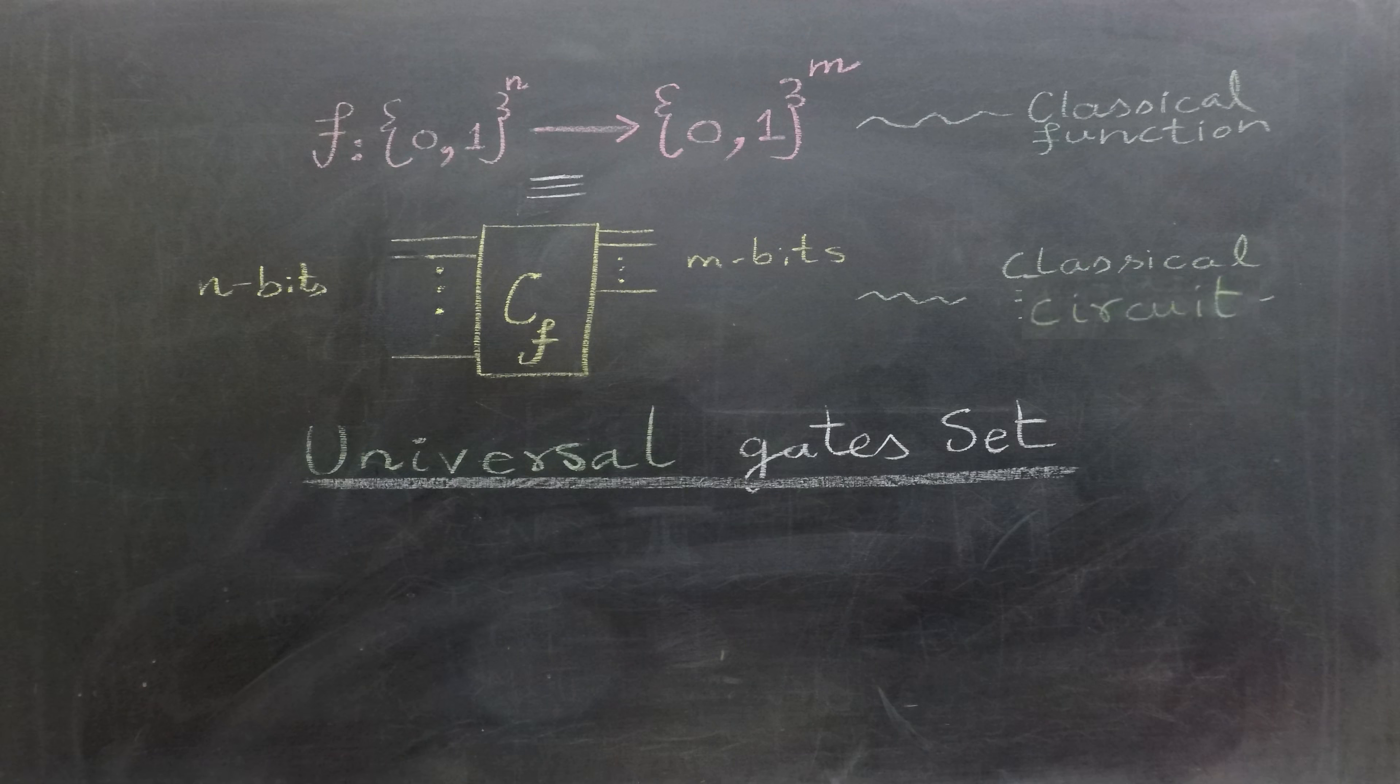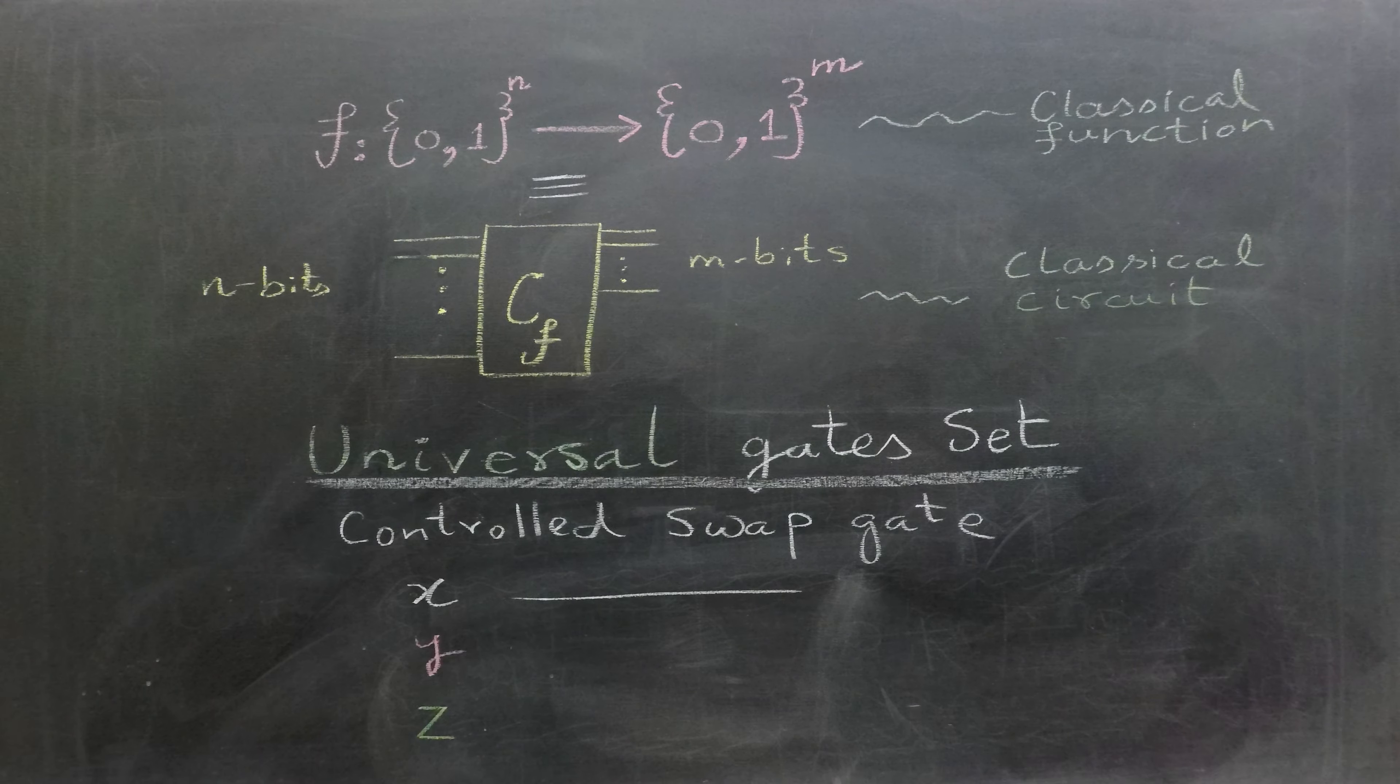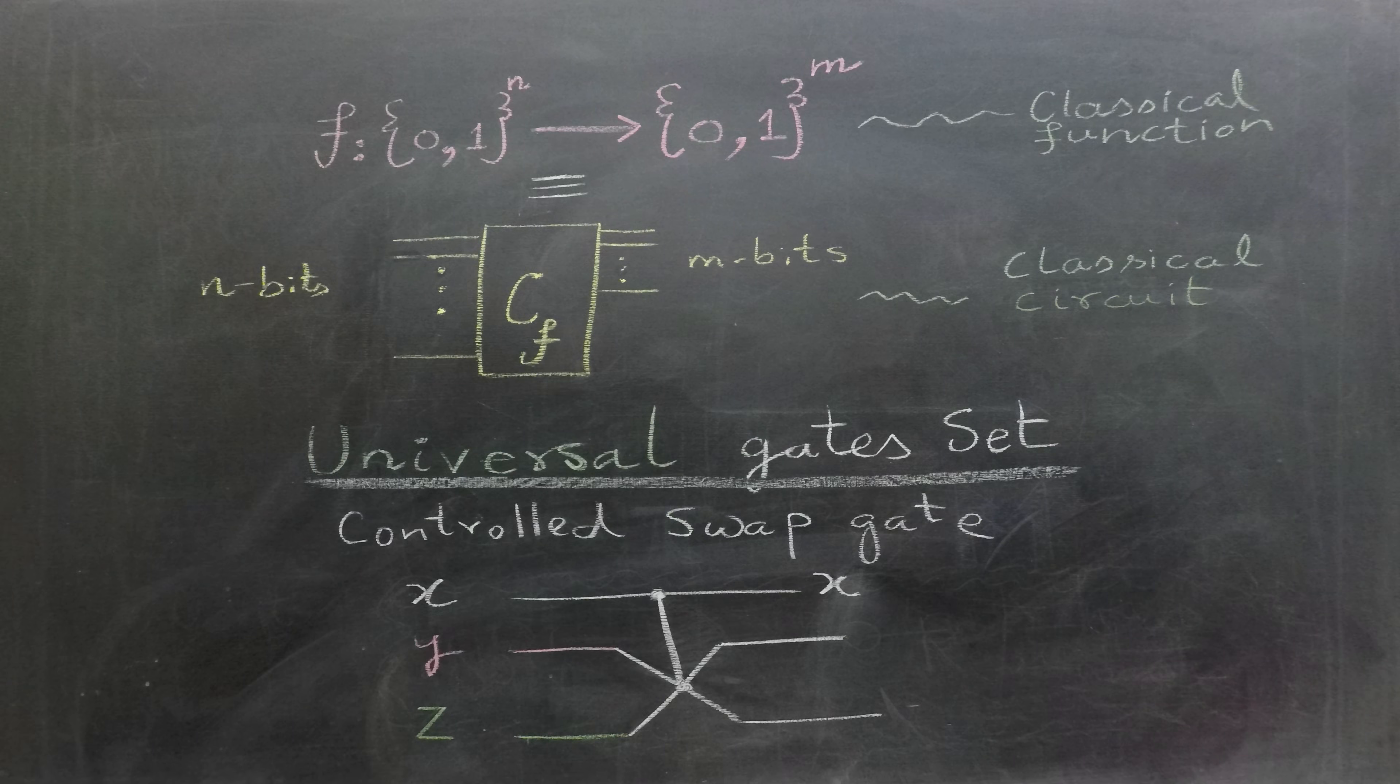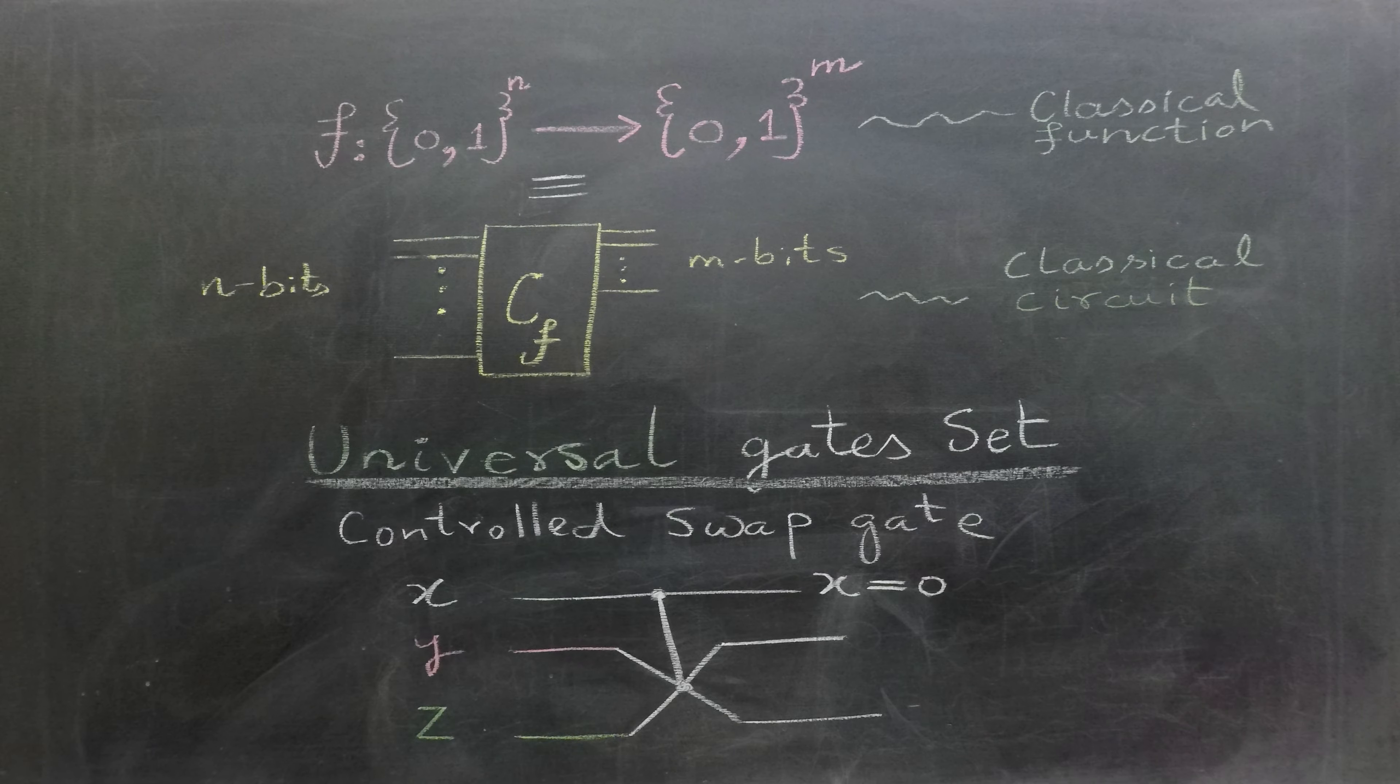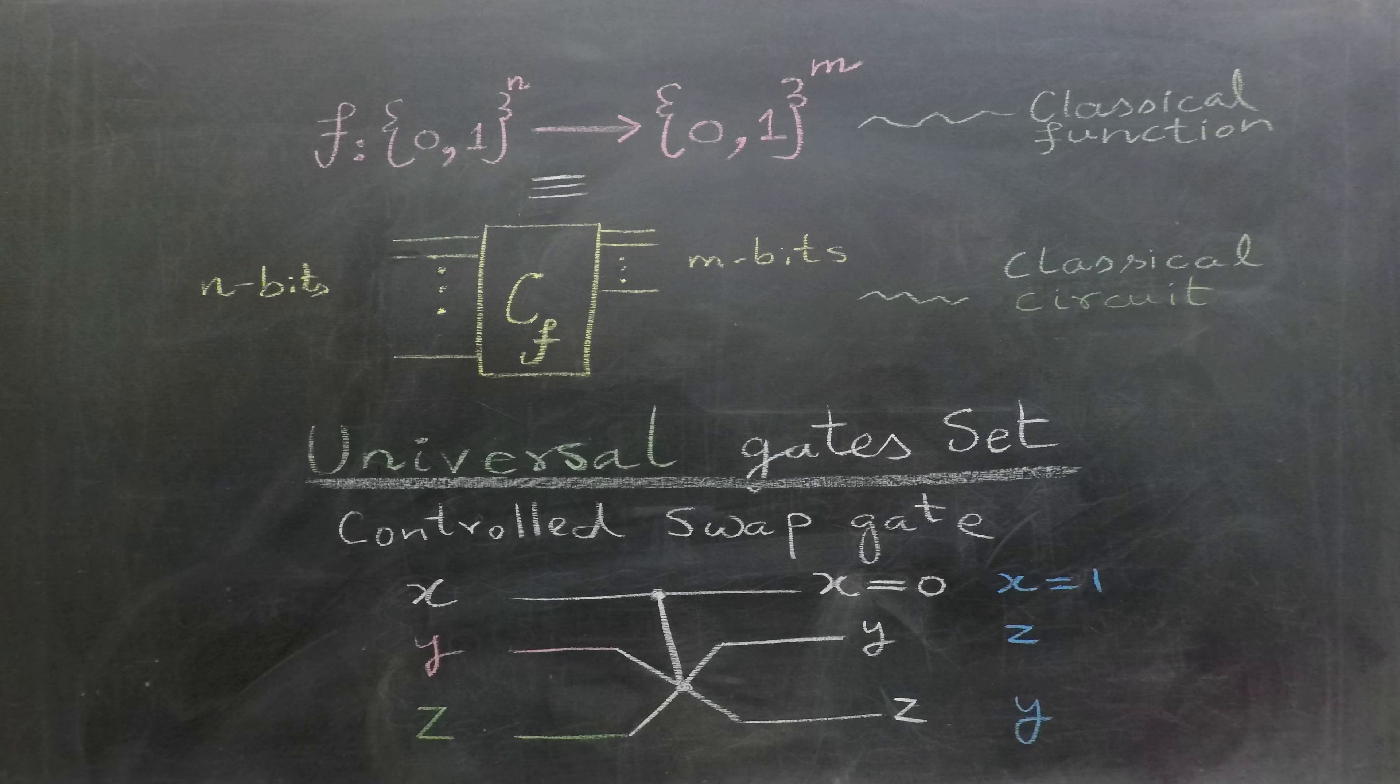To create a reversible AND gate, consider the controlled-swap gate. This gate takes 3 different inputs, let's call them x, y and z. In this setup, x acts as control-bit for swapping. When x equals 0, it outputs x, y and z in this order. However, when x is set to 1, it swaps y and z producing an output of x, z and y.